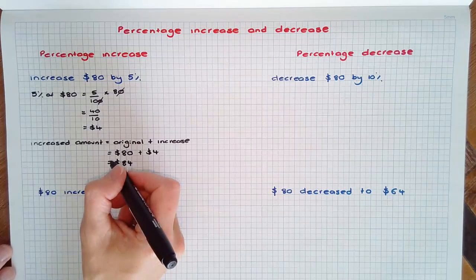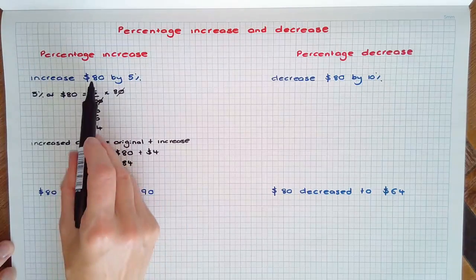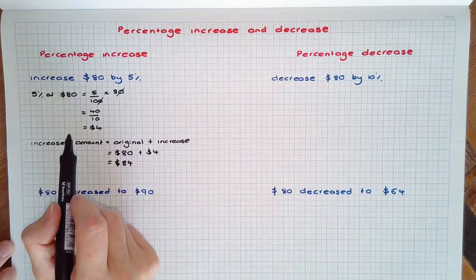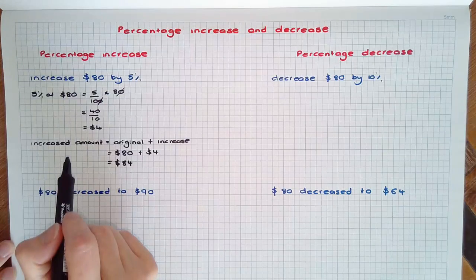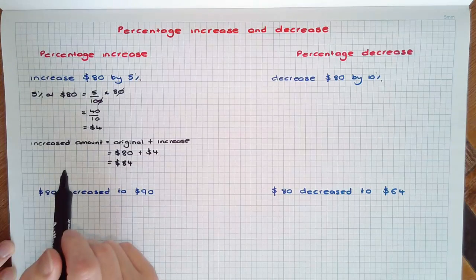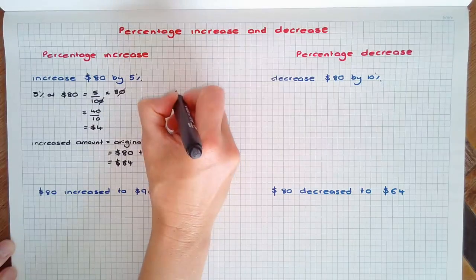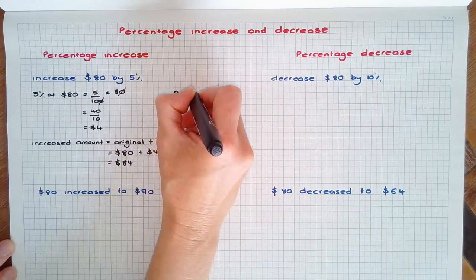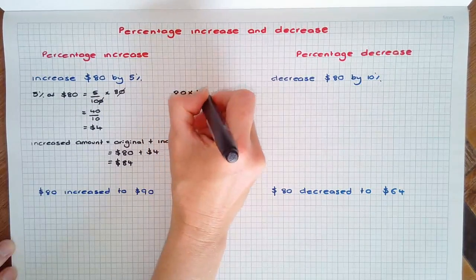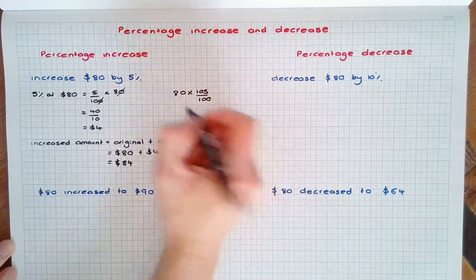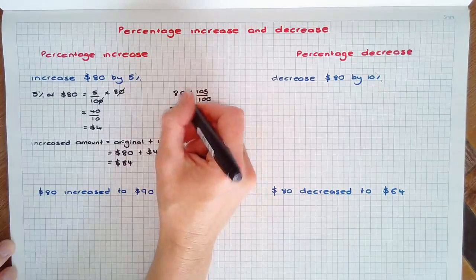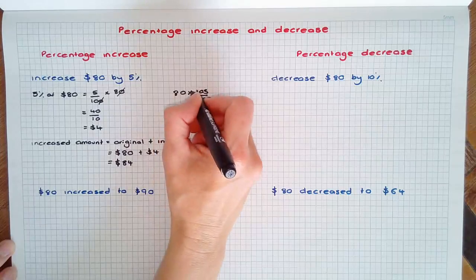Another way to consider this problem is multiplying $80 by 105%, that is the original 100% plus the 5% increase. That would look like 80 times 105 over 100, and using some cancelling we could go...